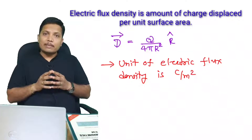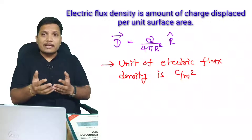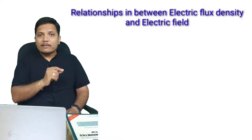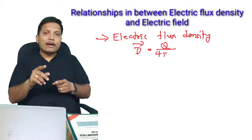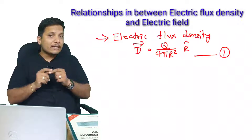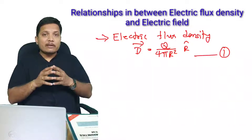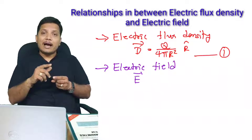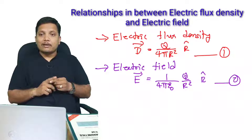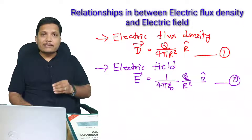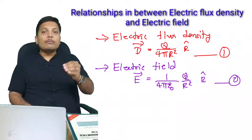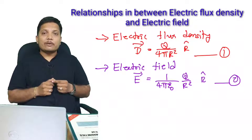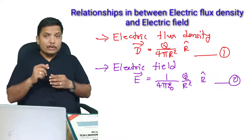Now I will establish a relationship between electric flux density and electric field. Electric flux density D is q divided by 4πr² into unit vector r̂ — call this equation 1. The electric field E is (1 / 4πε₀) × (q / r²) into unit vector r̂ — call this equation 2.